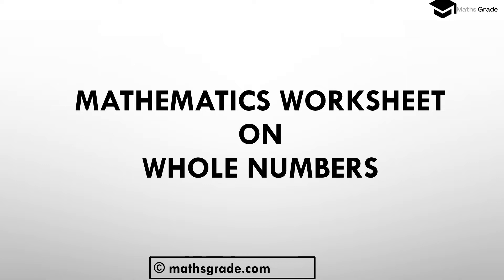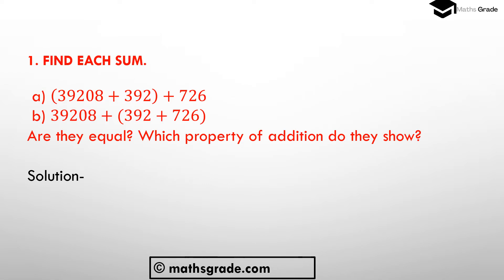If you like this video then please click the like button. Now we will solve question number 1: find each sum. First part is 39208 plus (392 plus 726). Second part is 39208 plus 392, plus 726 inside the bracket. We have to find the sum of these two addition sentences, check whether they are equal, and identify which property of addition they show.